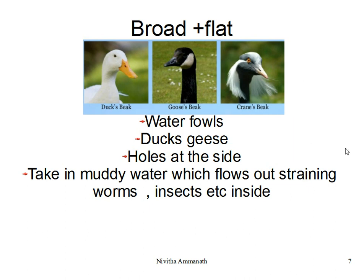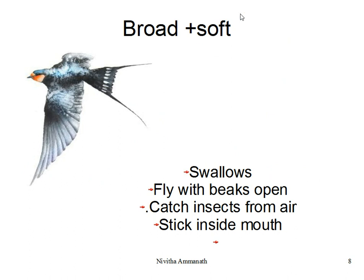Broad and soft beaks are found in swallows. Swallows fly with their beaks open and catch insects from the air. The insects stick inside the mouth. Their broad and soft beak helps them catch insects while flying through the air.